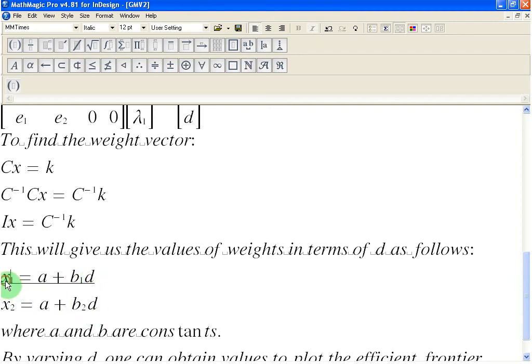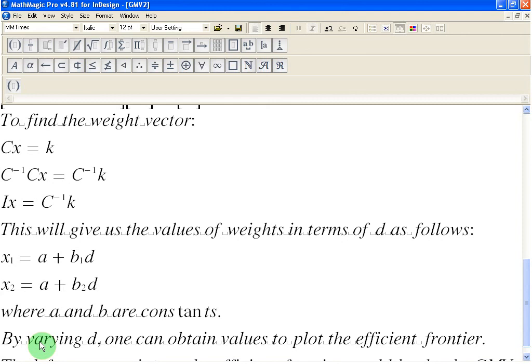And these weights are going to be giving to us the minimum possible variance for the portfolio. And by varying the D, we can generate a data set for us, which we can then plot graphically to give us the efficient frontier.